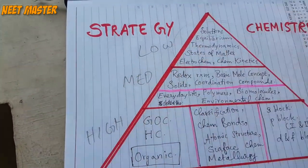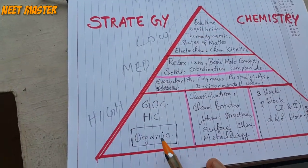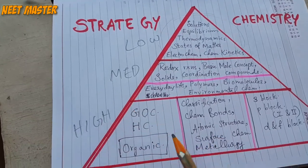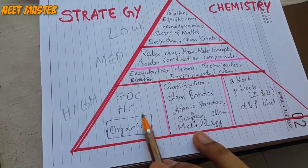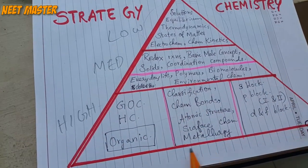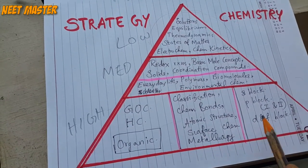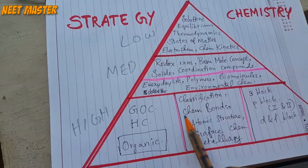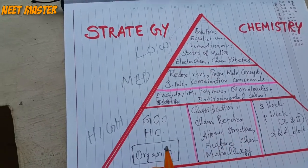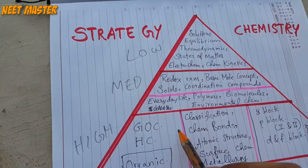The top is the top of the pyramid. You have to explain the base on the triangle. The base is the organic, inorganic. Our first question is that we are organic and we are in the GOC.